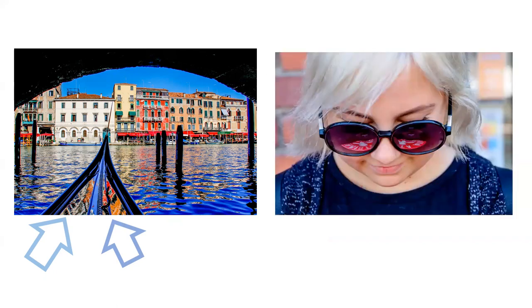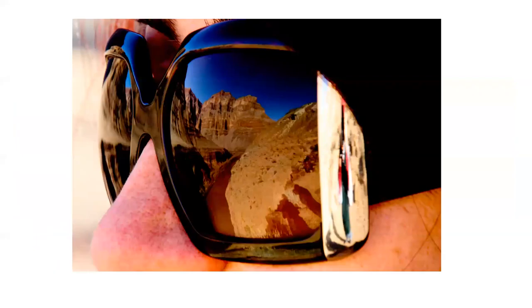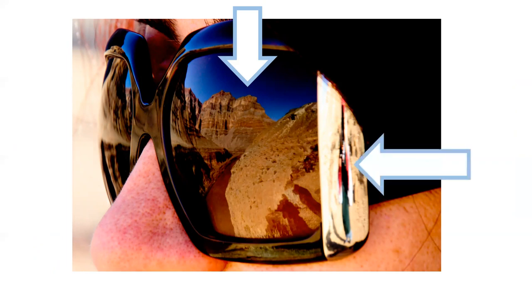Here, the buildings are reflected on the gondola as it emerges from under a bridge. Her sunglasses are reflecting a red logo on her black t-shirt. Here, an umbrella is reflected in these sunglasses. In this sunglasses reflection, I had ridden the helicopter into the Grand Canyon, so I've got the reflection of the Grand Canyon in her sunglasses. In the frame, you can see me taking the picture, and at the bottom of her lens you can see her and I standing in our shadows.